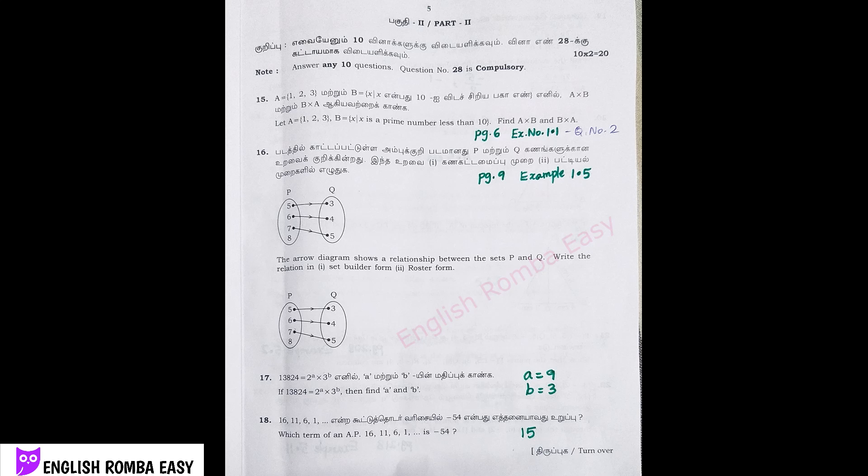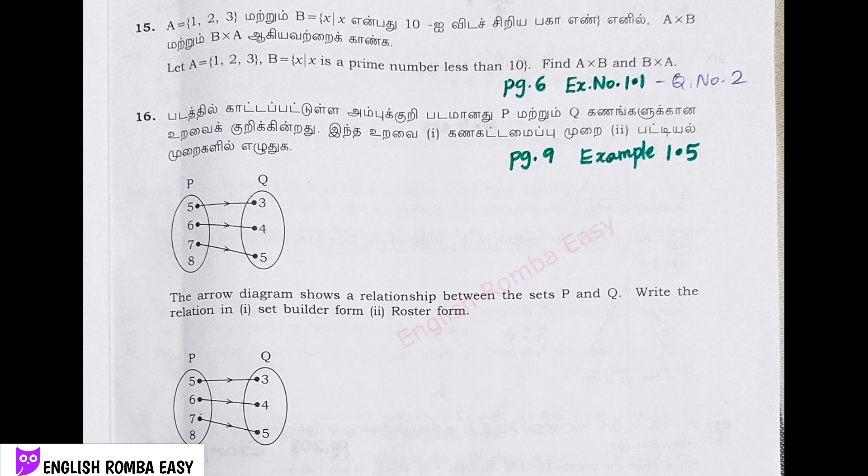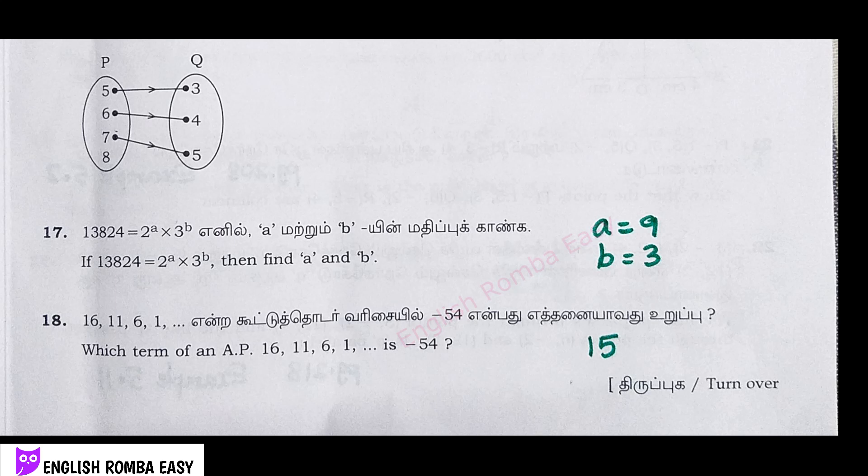Check the example number and exercise number. Question 15: Exercise number 1.1, question number 2, textbook page number 6. Question 16 answer: Example 1.5, given in page number 9. Question 17 answer: A is equal to 9, B is equal to 2, values 9 and 3. Question 18 answer: 15.